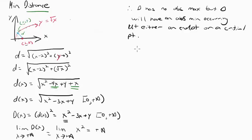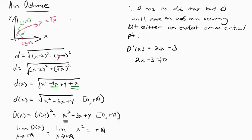Let's find the critical point. I take the derivative: D prime of x equals 2x minus 3. The derivative is fairly simple. Now I'll find the critical point by setting the derivative equal to 0 — it won't be undefined here. Setting 2x minus 3 equal to 0 and solving: add 3, divide by 2, gives x equals 3 over 2. So that's my critical point.